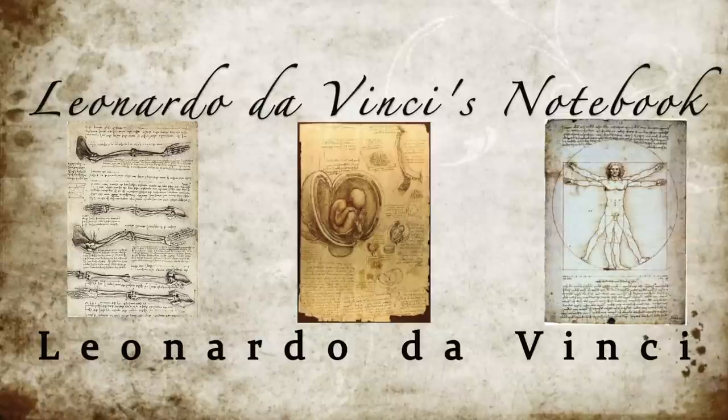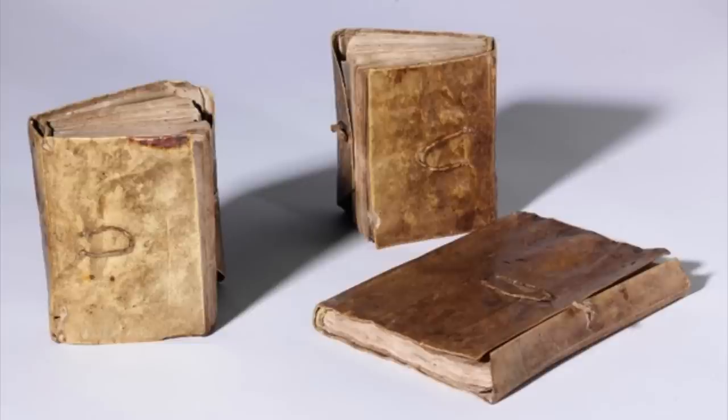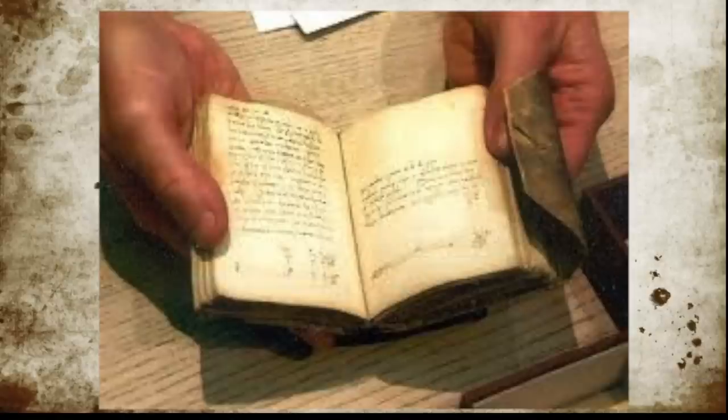Da Vinci kept very careful notes of all the work that he did. He took these notes on loose paper and put them together in codices. He wrote his notes backwards so no one else could decipher or copy his work. There were about 13,000 pages of work in all his notebooks, full of themes of architecture, geometry, weights, astronomy, zoology, mathematics, military arts, machines, robotics, bird flight, geology, hydrology, religious themes, and anatomy.